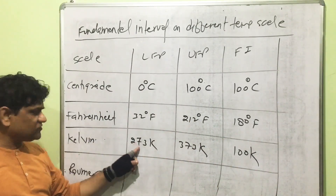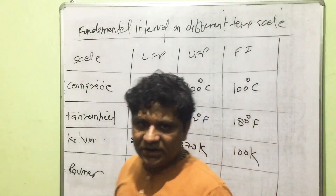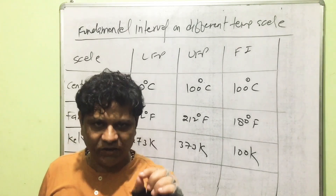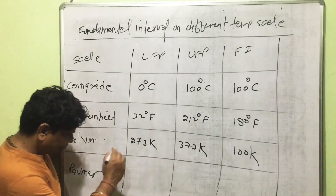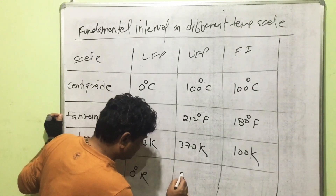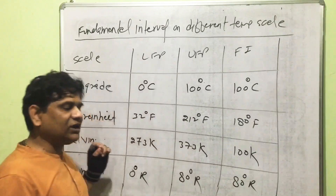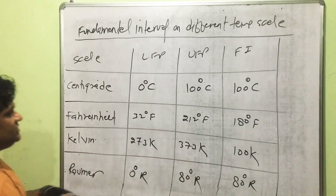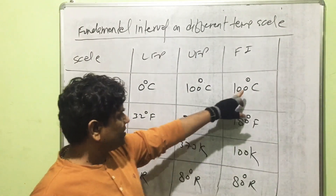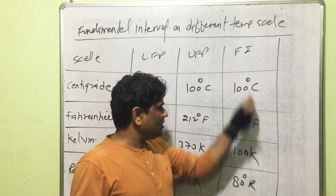One important note: the lower fixed point on the Kelvin scale written here as 273 K is an approximate value, not the exact value. For the Réaumur scale: lower fixed point is 0°R, upper fixed point is 80°R, fundamental interval is 80°R, and total number of divisions is also 80. So across the scales: 100 divisions for centigrade, 180 for Fahrenheit, 100 for Kelvin, and 80 for Réaumur.